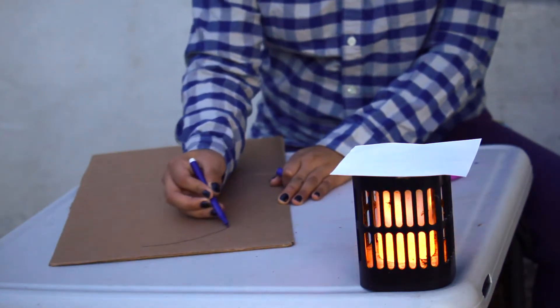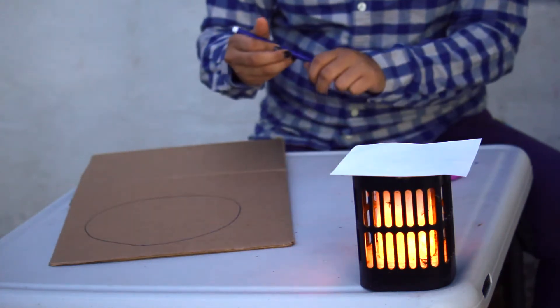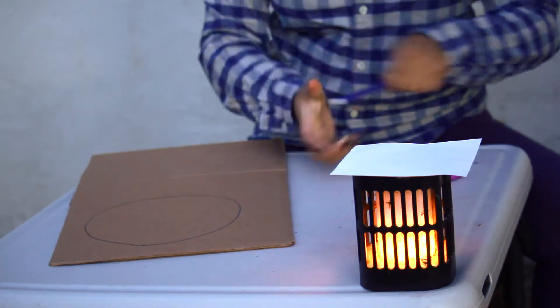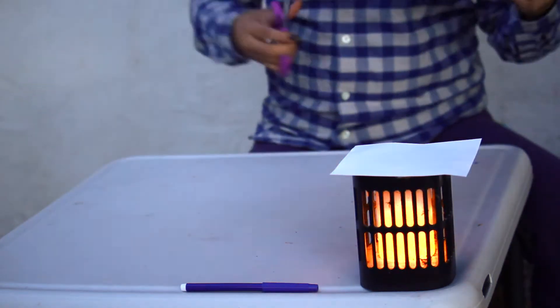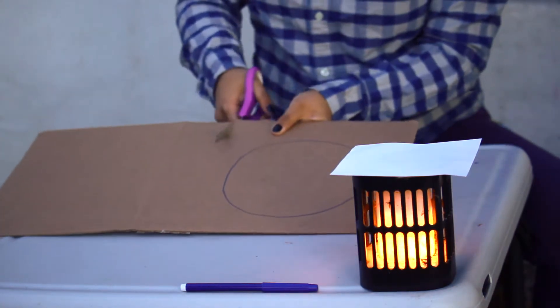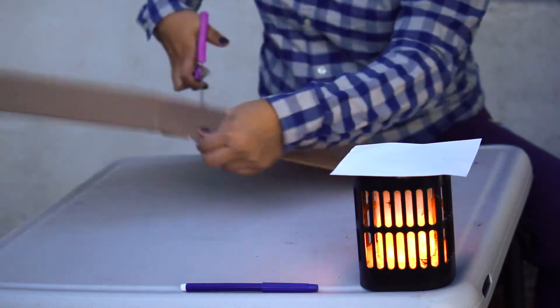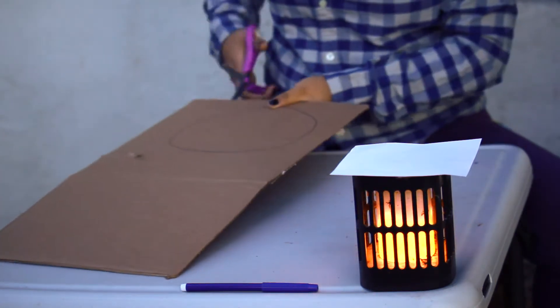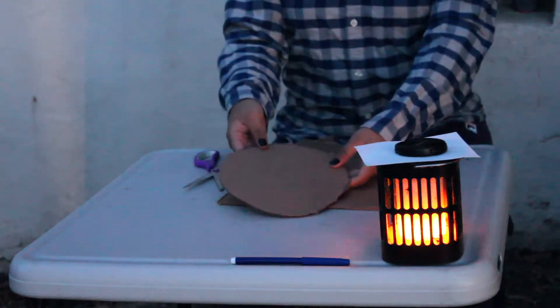Okay, so when you're done drawing your circle, you're going to cut it out. If you need help with cutting out the circle, go ahead and ask an adult for help. I know it can be a little bit tricky. Okay, so I'm all done cutting out my circle.